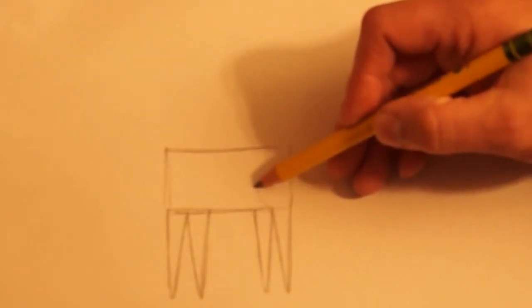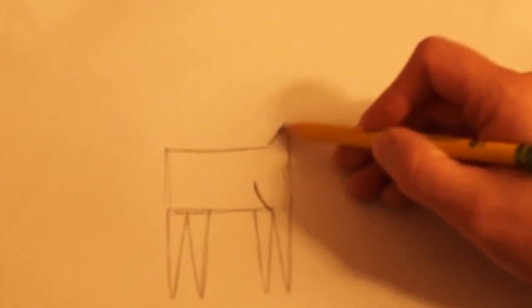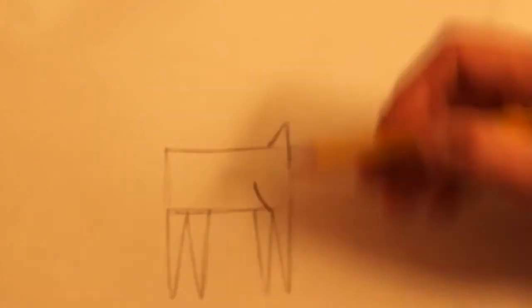Okay, on this back leg here, we're going to make a curve, because it's a little bit different than the front leg. Okay, on the tail, next we're going to make the tail. It's like a triangle.